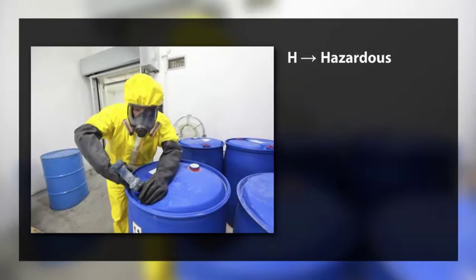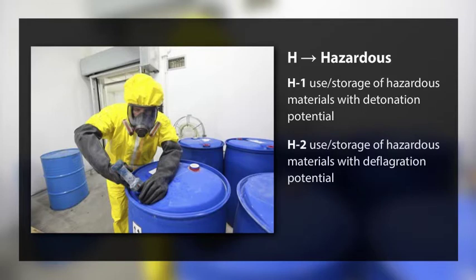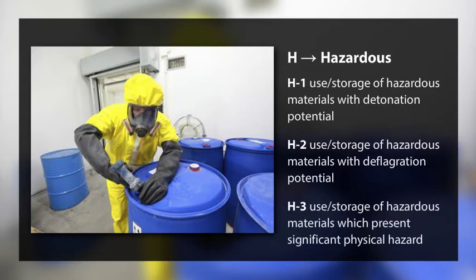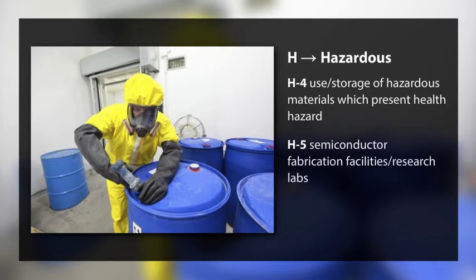Hazardous subgroups: H-1 — use or storage of hazardous materials with a detonation potential; H-2 — use or storage of hazardous materials with a deflagration potential; H-3 — use or storage of hazardous materials which present a significant physical hazard; H-4 — use or storage of hazardous materials which present a health hazard; H-5 — semiconductor fabrication facilities or research labs.